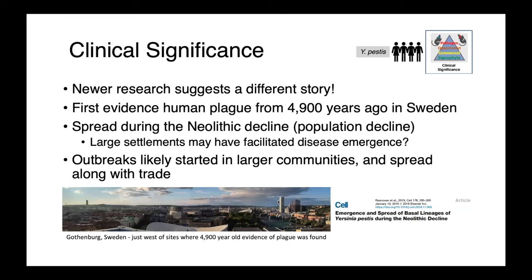Newer research, however, suggests a different story. People have gone back to ancient grave and burial sites, and a 2019 paper in Cell found the first evidence of human plague 4,900 years ago in Sweden. The authors suggested that plague spread during the Neolithic decline — a period of population collapse in Europe. Large settlements developing just prior to the Neolithic decline may have facilitated disease emergence, with outbreaks starting in larger communities and spreading along trade routes — an example of the epidemiological triad where high human population density created a permissive environment.